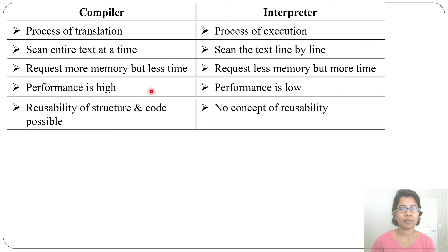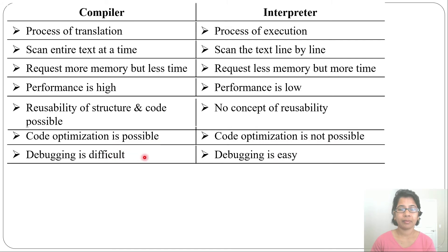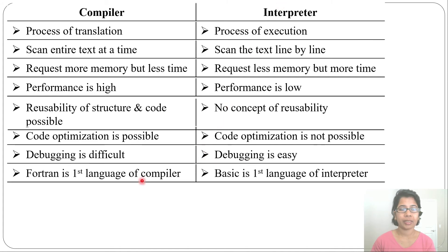In case of a compiler, reusability of structure and code is possible. In case of an interpreter, there is no concept of reusability. Code optimization is possible in case of a compiler, but not possible in case of an interpreter. Debugging is difficult in case of a compiler, while debugging is easy in case of an interpreter.